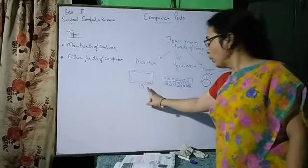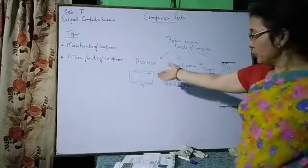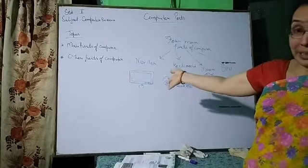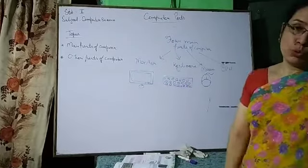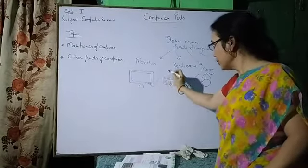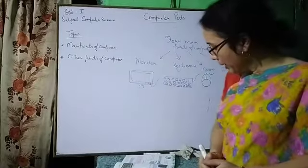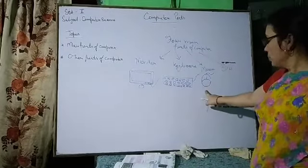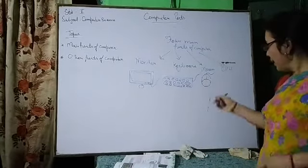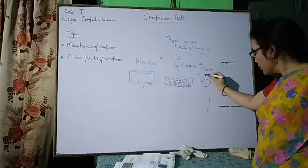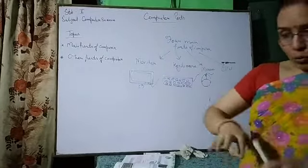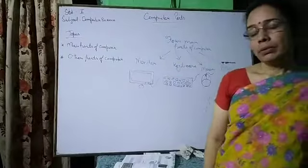So now we have discussed monitor — it is a display unit that shows us all the work we do on the computer. Keyboard is good for typing, many keys are there on keyboard. And mouse — it has one wire, and two buttons that you can see, and there is also one scroll wheel. I will teach you how to use and hold the mouse.